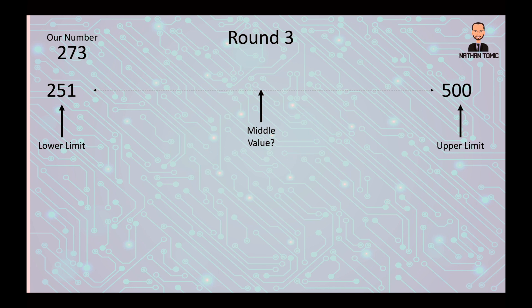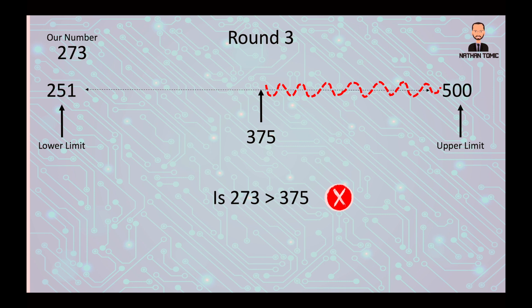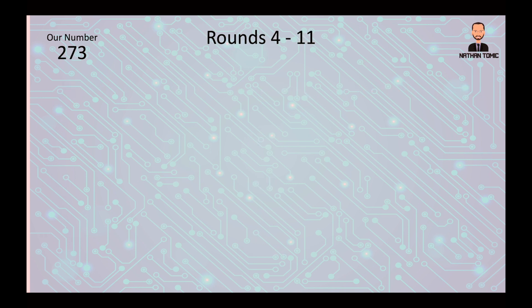Again we look for our middle value, do the math. We've still got a decimal so we'll round down again to 375. We're now asking is our number 273 greater than 375? 273 is of course not greater than 375, so it is false. We wipe out everything above. Our new lower limit stays as 251 and our new upper limit stays as 375, and we go again.